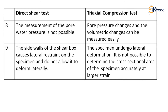The measurement of pore water pressure is not possible in direct shear test. Whereas in triaxial compression test, pore water pressure changes and volumetric changes can be measured easily. The side walls of the shear box in direct shear test cause lateral restraint on the specimen and do not allow it to deform laterally. That means in direct shear test, only vertical deformation takes place and the cross-sectional area of the sample remains constant.